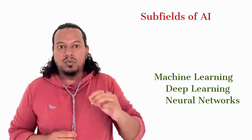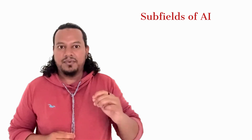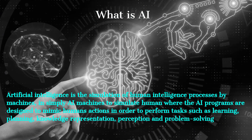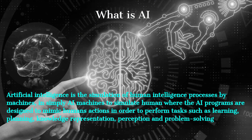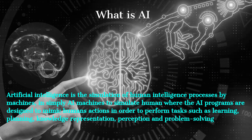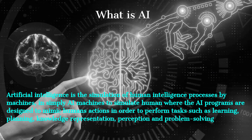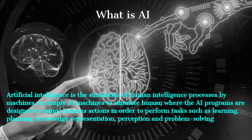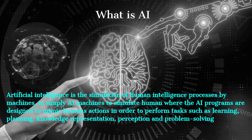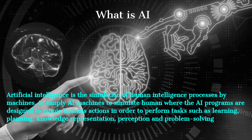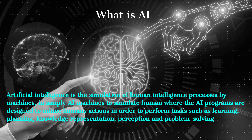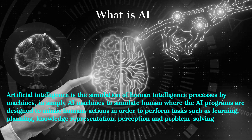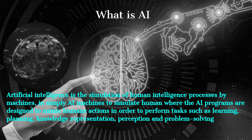Let's see a bit more detail about each sub-field of AI. Before that, let's revise what AI is. AI is the simulation of human intelligence processed by machines. In simple words, AI machines simulate human actions where AI programs are designed to mimic human activities in order to perform tasks such as learning, planning, knowledge representation, perception, and problem solving.